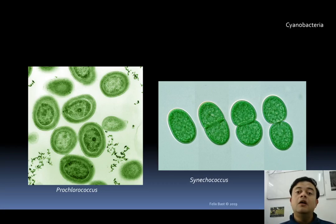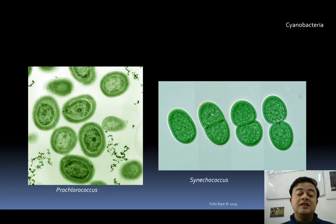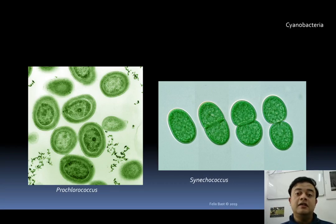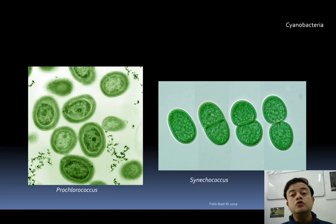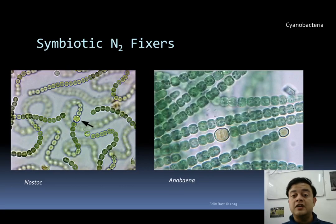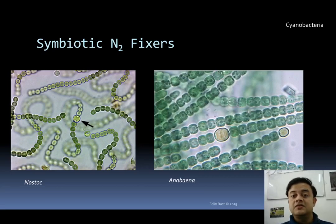Unfortunately, people take Prochlorococcus and Synechococcus for granted. Most school syllabi and even BSc and MSc botany students end up not knowing the existence of these most important cyanobacteria. Most cyanobacteria are also diazotrophic, meaning they can fix atmospheric nitrogen into ammonia and other nitrate or nitrite molecules.